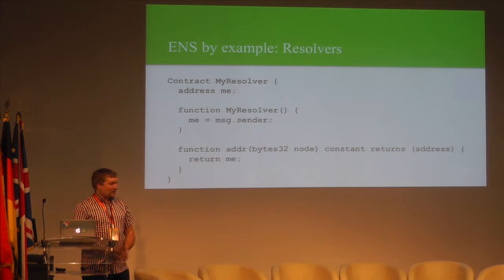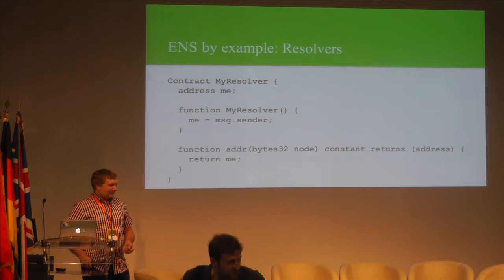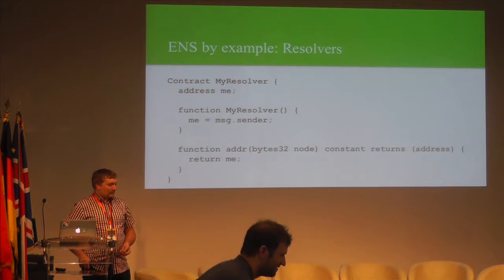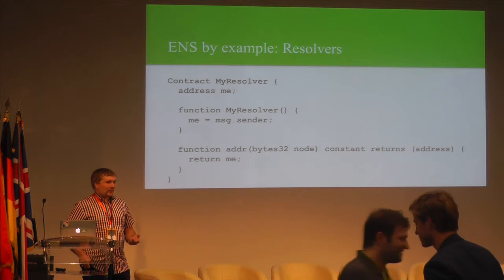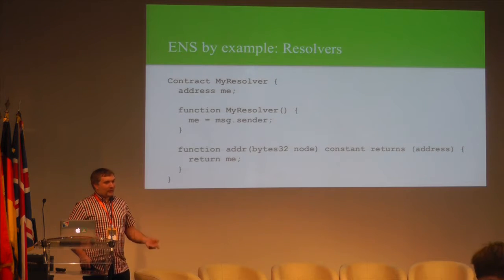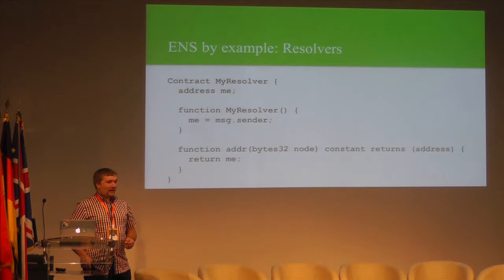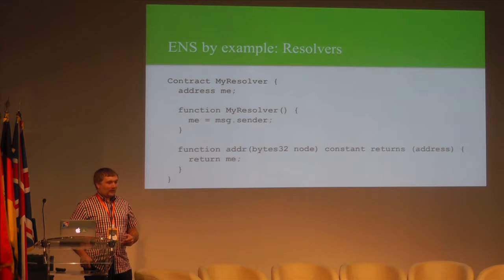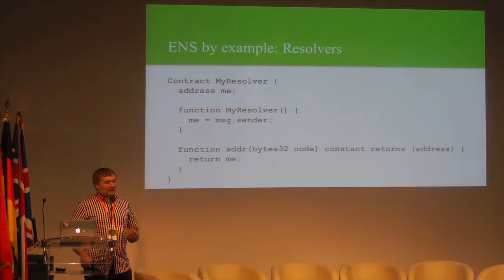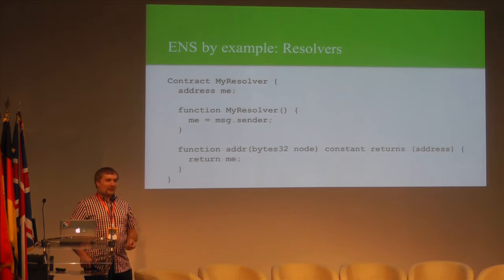Here's an extremely simple resolver — perhaps the simplest possible. If you deploy it, it will record who deployed it and then answer all queries for addresses by responding with your address. By deploying this 10-line contract on Ethereum and updating the registry for a domain you own, you can assign a name to your wallet. Most resolvers are more complicated than this, though not vastly so. There are also public resolvers available for anyone to use, maintaining simple key-value mappings for people wanting to map things on a one-off basis.